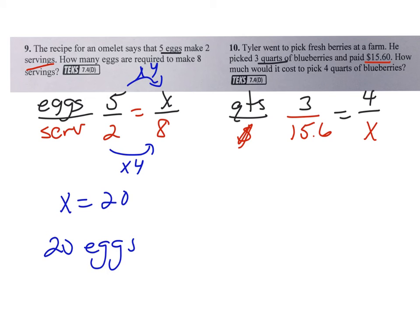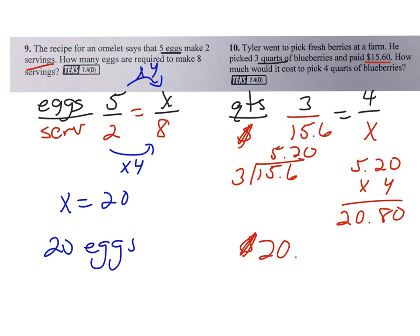So in order to do this one, you do not have a scale factor. There's nothing from 3 to 4. You can't multiply it. You can find a unit rate. So if you prefer that, you divide, and you just get 15.6 for 3 quarts. Put the money under the hood every time, and you get $5.20. So $5.20, and they want to know 4 quarts now, because they're $5.20 each. And you get $20.80. Write out your final answer, $20.80 for 4 quarts.